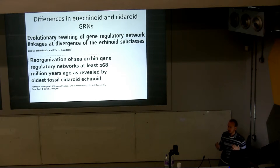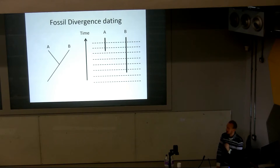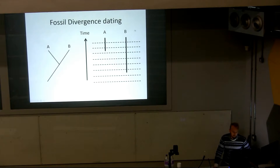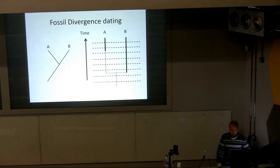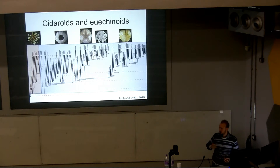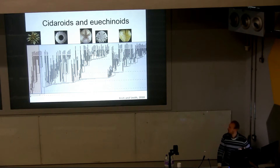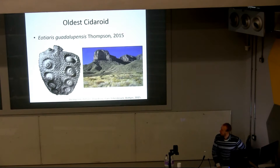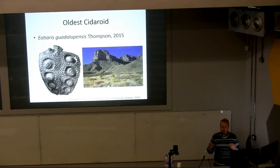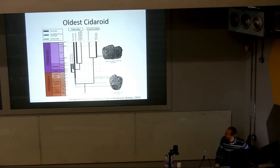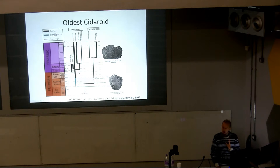To do that, we can look at the fossils. If we have two taxa A and B and their sister taxa, the divergence took place before the appearance of B in the fossil record. With respect to the work published by Erkenbrack and Davidson and myself, we used the oldest cidaroid to date the timing of this to the late Permian, specifically the Guadalupe Mountains—where Eoteris guadalupensis, the oldest cidaroid, was found—constraining the GRN divergence to the Guadalupian, about 268 million years ago.